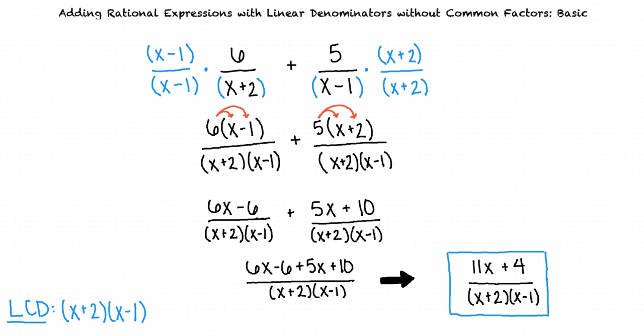Okay, I think I understand. To add rational expressions where the denominators are linear and don't have any common factors, we will multiply the denominators to find our least common denominator. From there, we can complete the addition and simplify. That's exactly right. Great work!